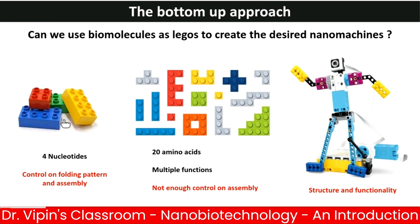The advantage of using DNA as your starting material is that you know exactly how it is going to fold — you have a lot of prediction power because it follows base complementarity rules: A pairs to T, C pairs to G. Given a primary structure of DNA, which is the sequence of nucleotides, you can very easily predict the secondary structure it will form, whether through self-assembly or guided assembly using staples.